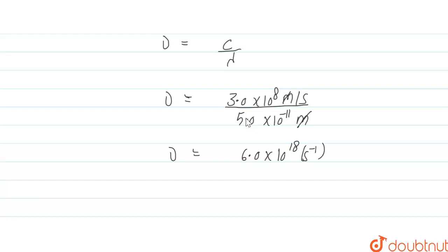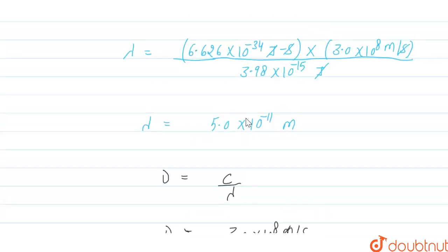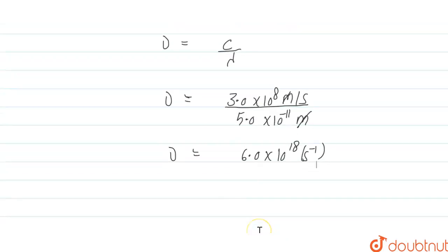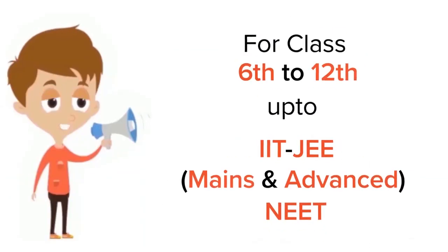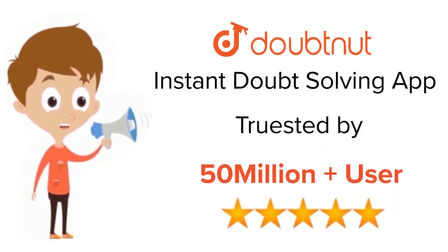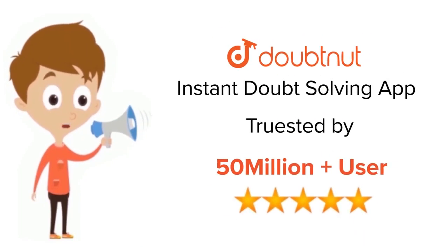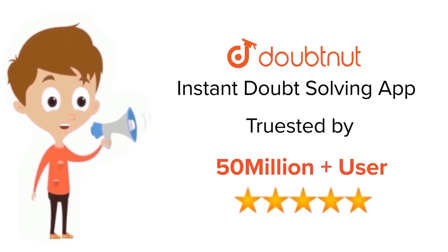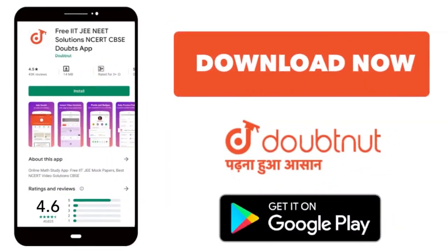So this is our frequency and this is our wavelength. I hope this answered your question. Thank you. For class 6 to 12, IIT JEE and NEET level — trusted by more than 5 crore students. Download the Doubtnut app today.